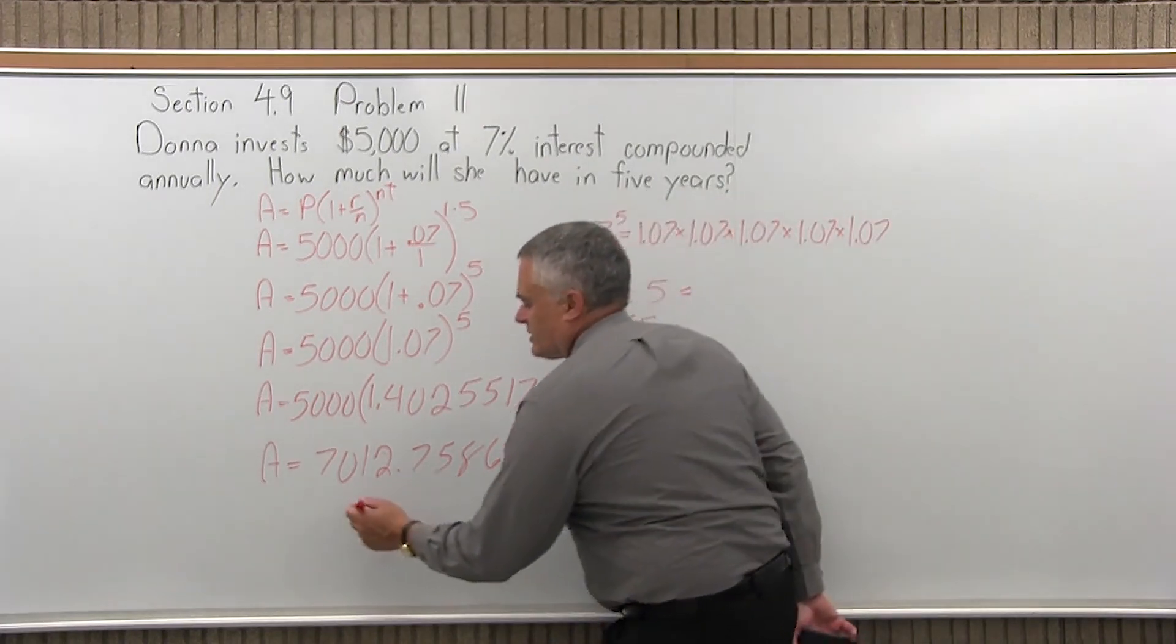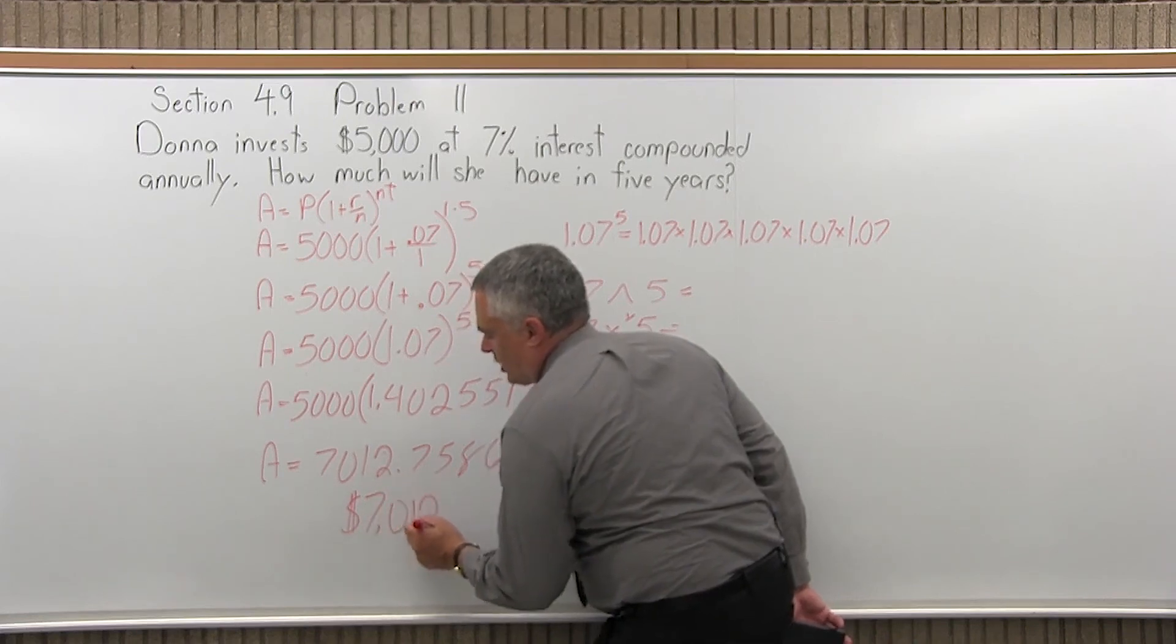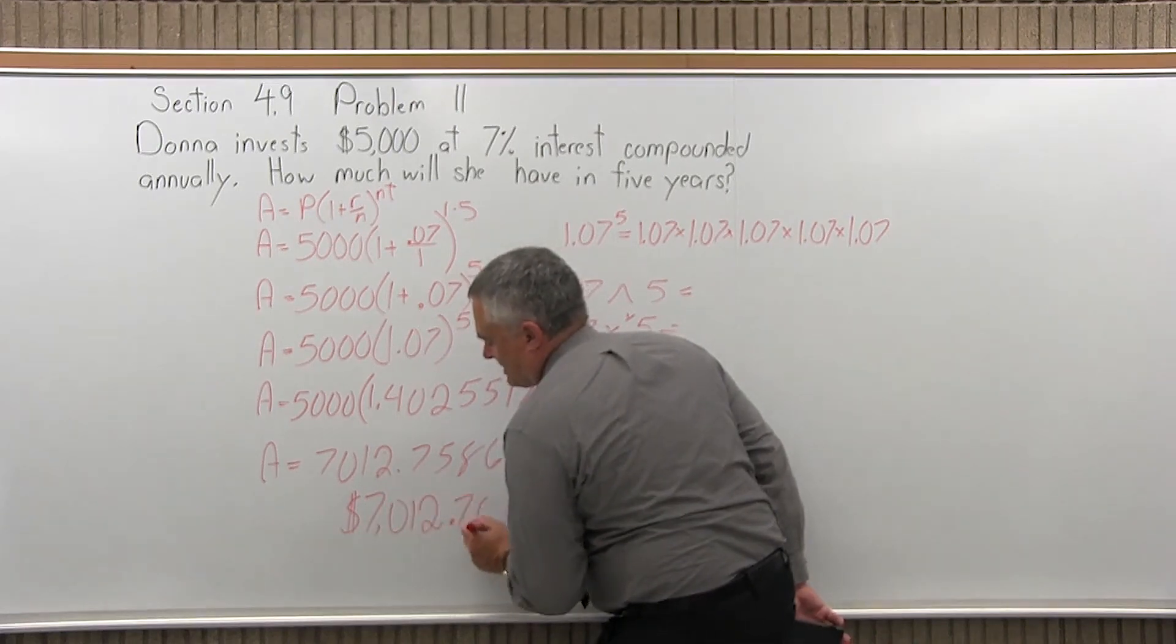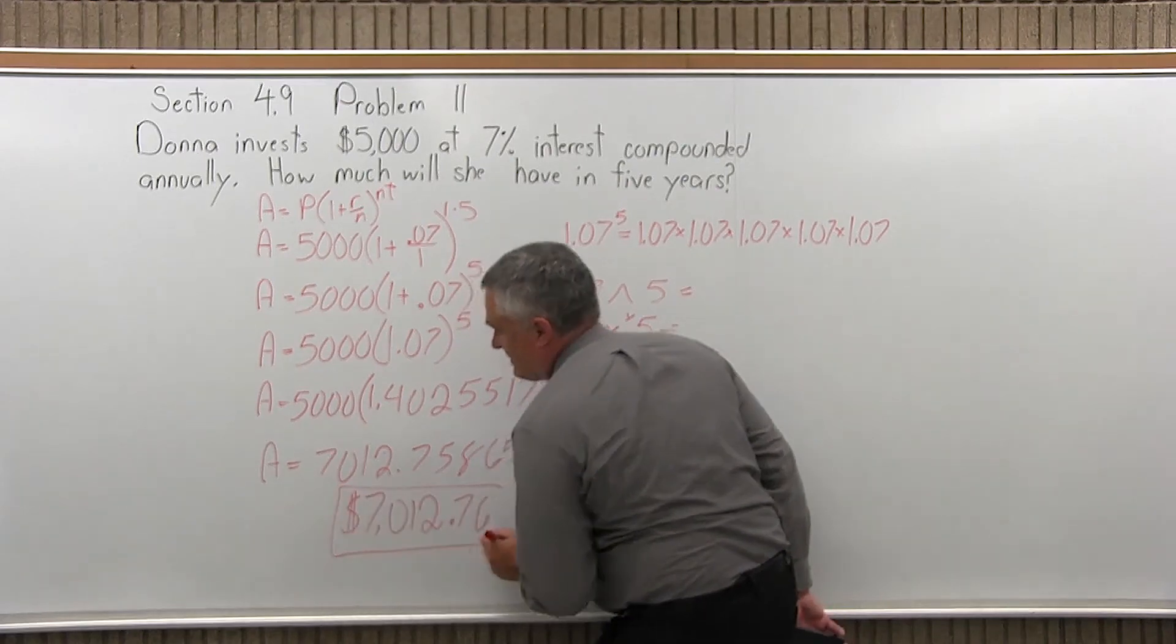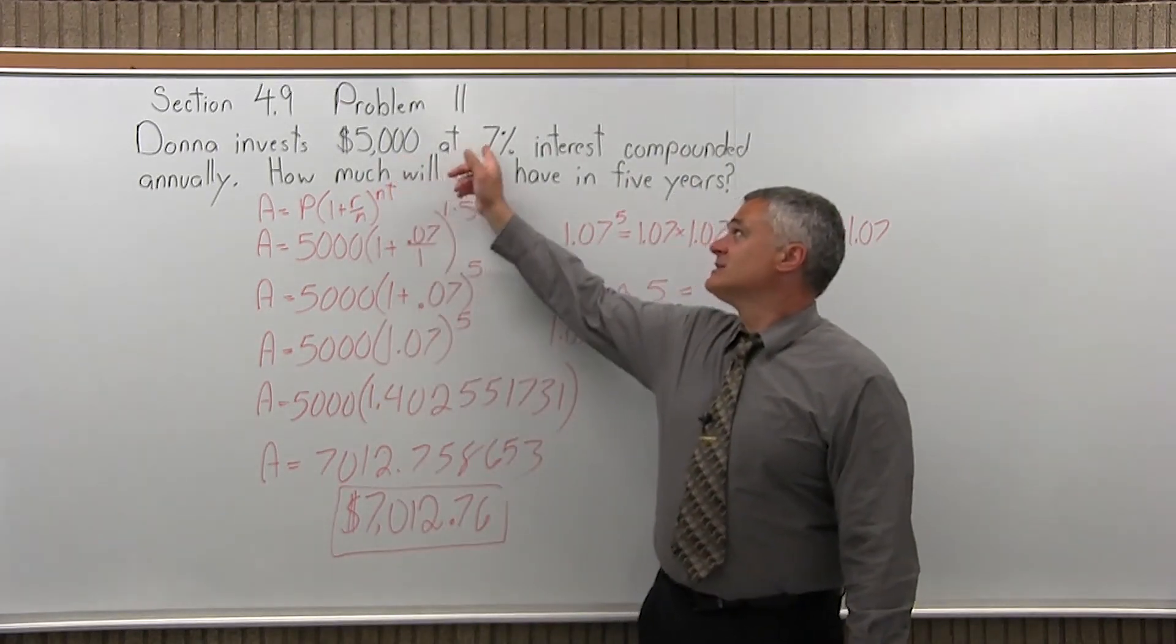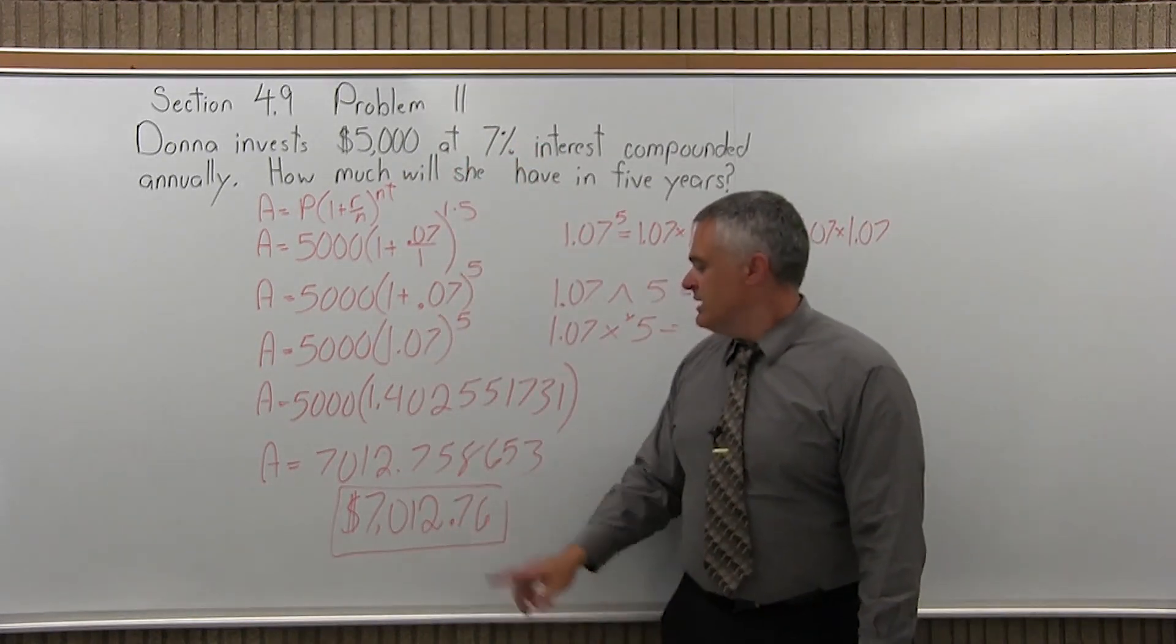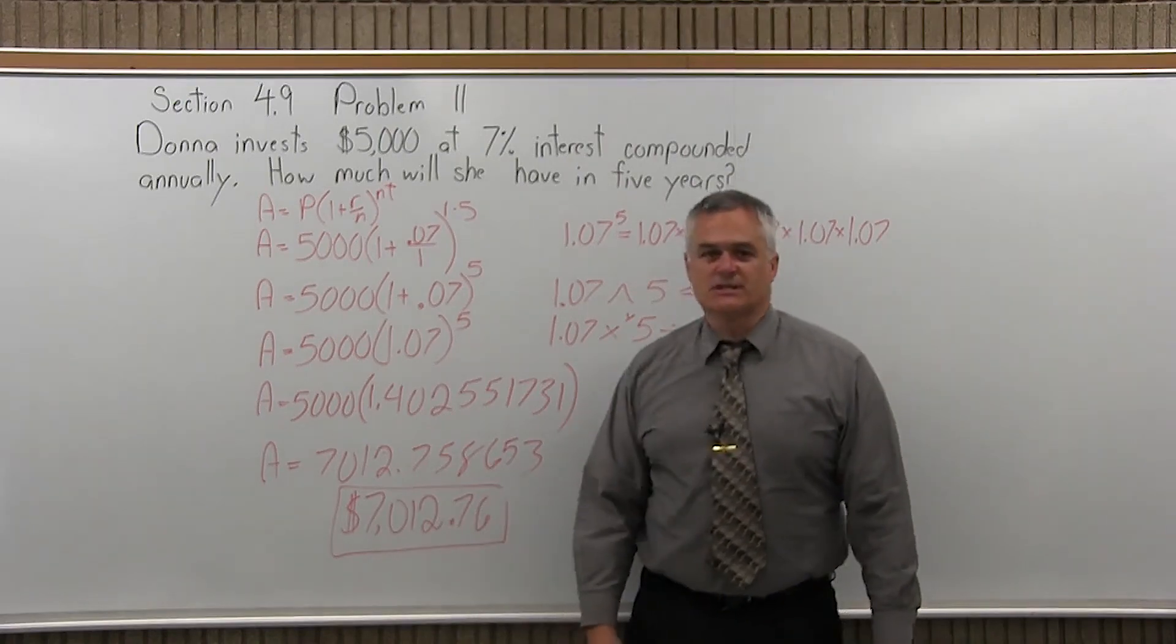So my final answer, and because it's money, I'll use a dollar symbol, is $7,012.76. And that's the answer to the question. So Donna invests 5,000 at 7% compounded annually. Finally, after five years, that 5,000 will grow to $7,012.76.